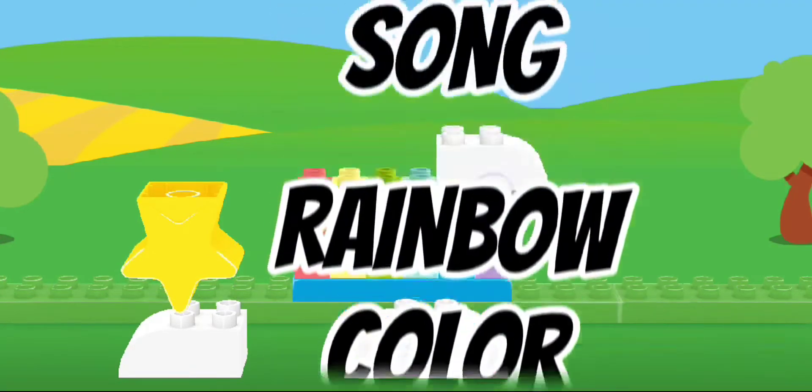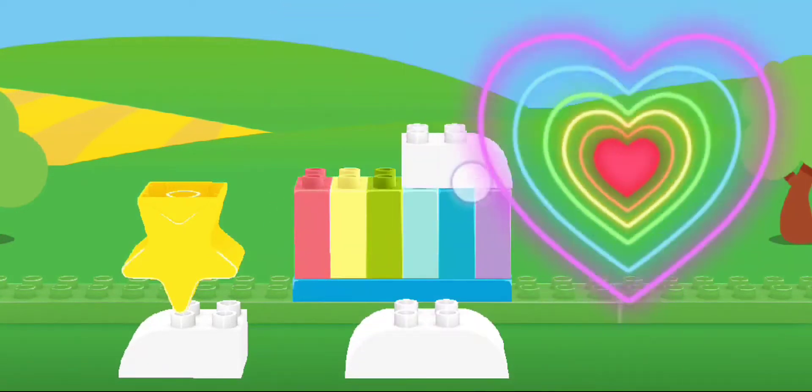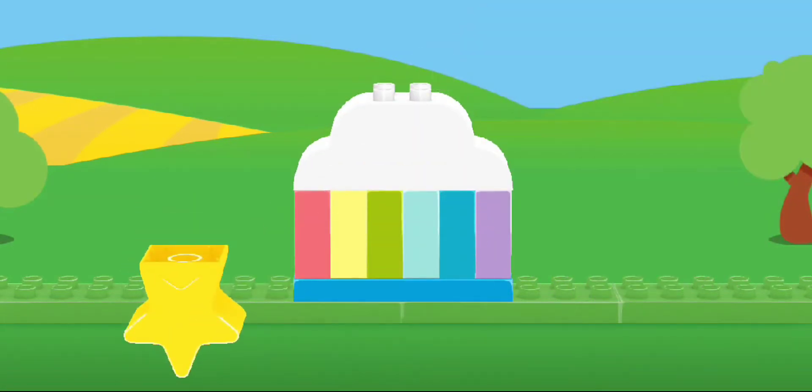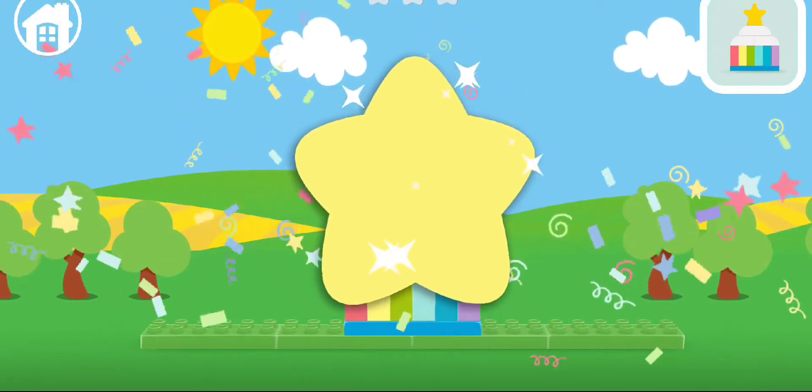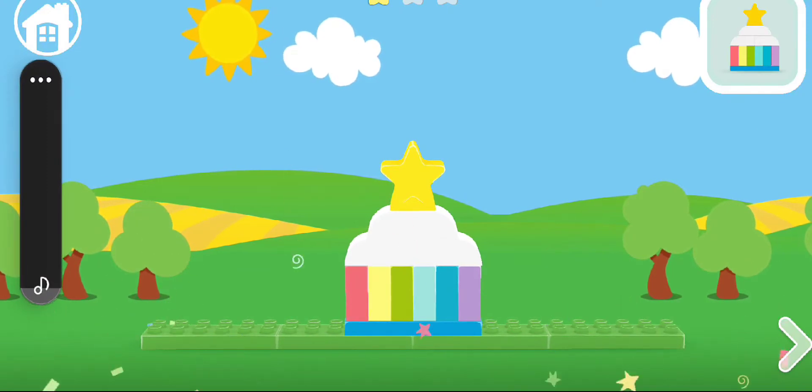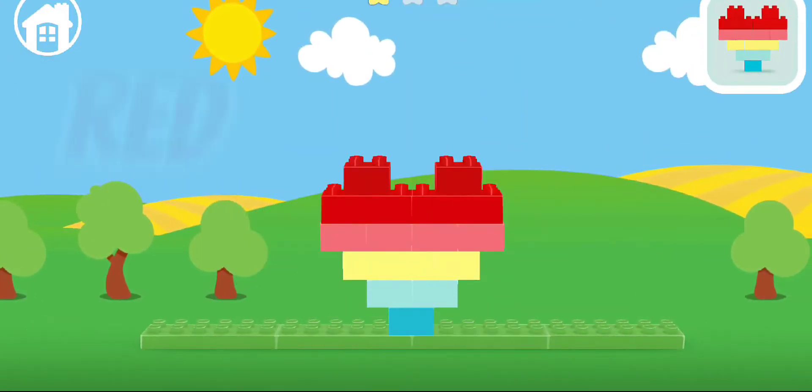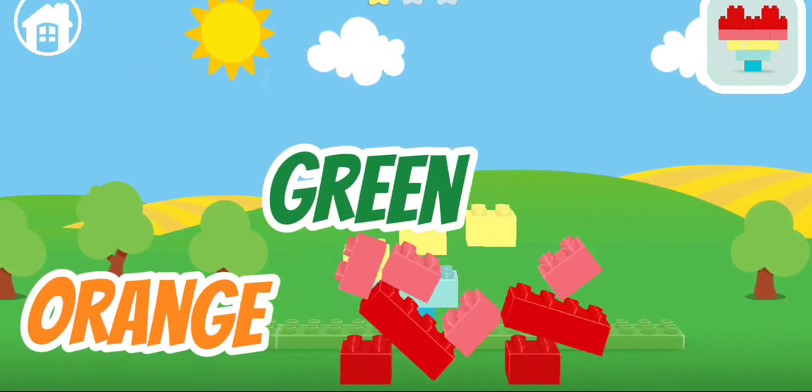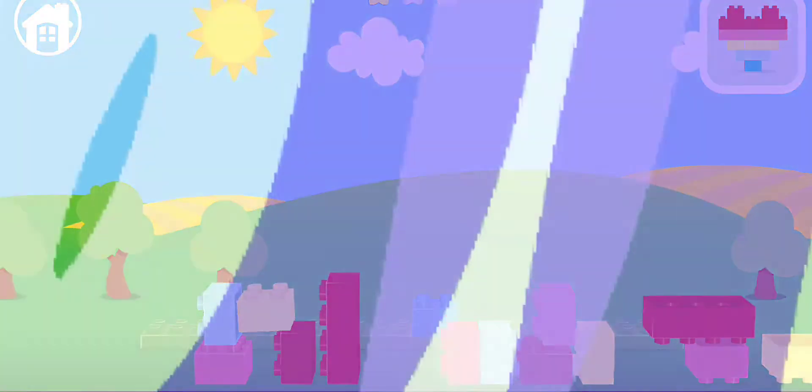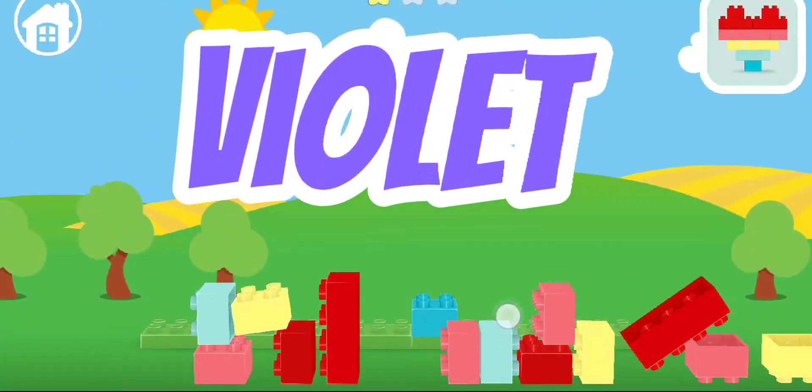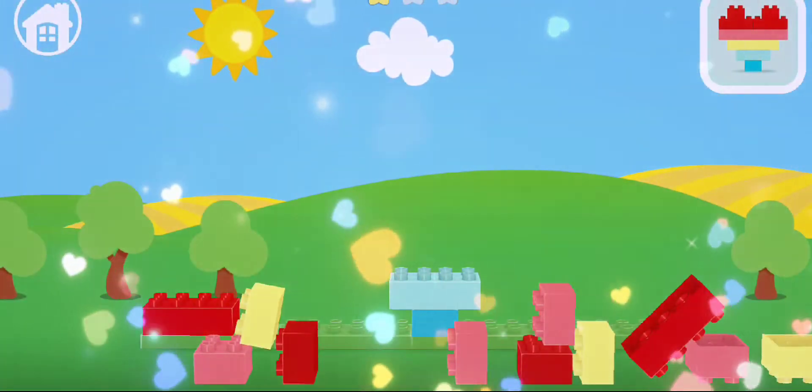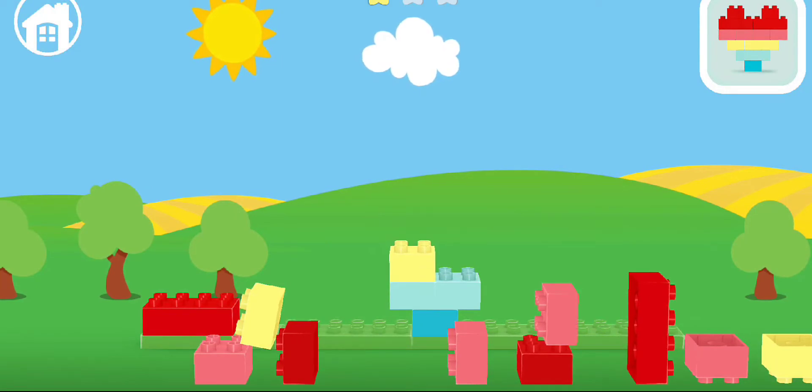Rainbow Color Song. Rainbow, rainbow, high and bright. Rainbow, rainbow, made of light. From the garden to the garden I see colors all around! Red, orange, yellow, green, blue, indigo and violet too. Red, orange, yellow, green, blue, indigo and violet too.